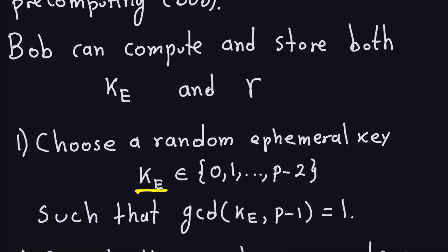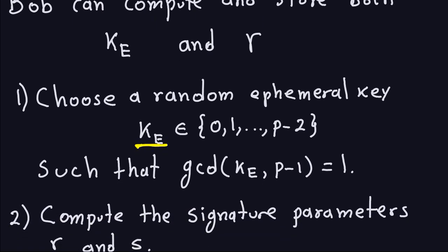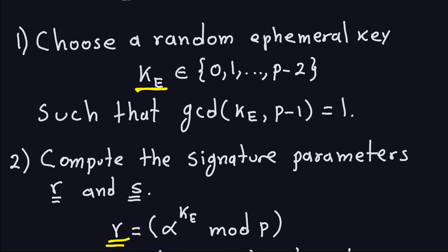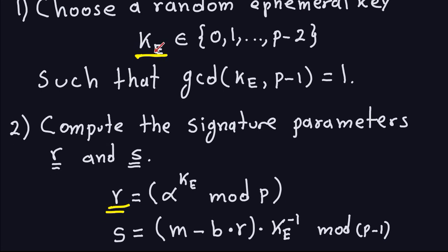What is the signing process? If you recall from the first video, you choose a random ephemeral key, which is something that Bob chooses in such a way that the greatest common divisor between the ephemeral key and P-1 is 1. So once he chooses that, then he can just store it. The R is part of the signature, but once the ephemeral key is computed, then the R is completely determined. It's just this generator to the ephemeral key modulo P. So this is pre-computed.